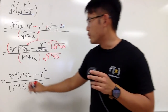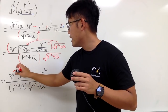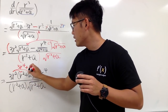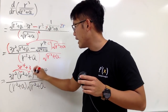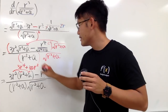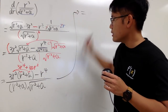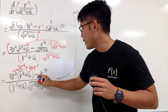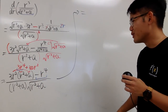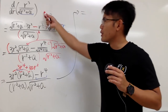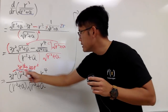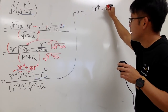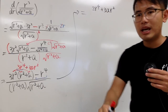On the top we can multiply through: we get 3r to the 4th power plus 3a r squared. Then 3r to the 4th minus r to the 4th gives 2r to the 4th. So the numerator is 2r to the 4th power plus 3a r squared, all over r squared plus a times square root of r squared plus a. That's the only calculus step; the rest is just algebra.